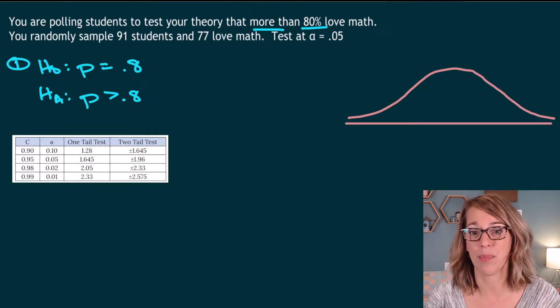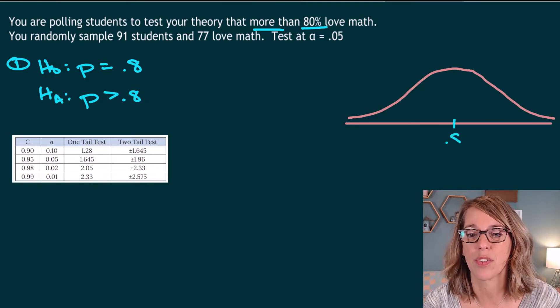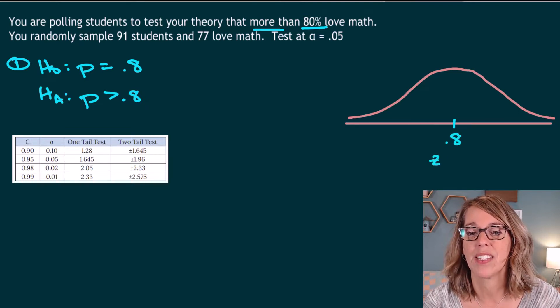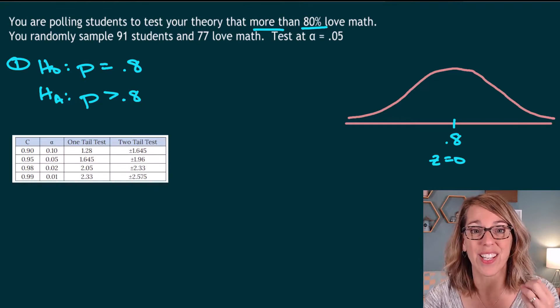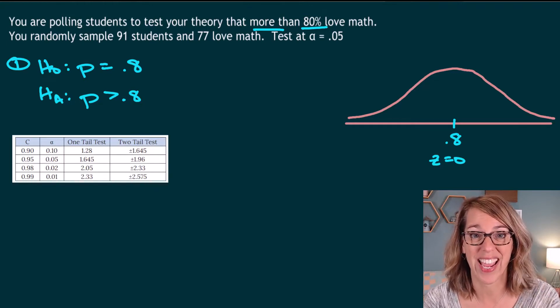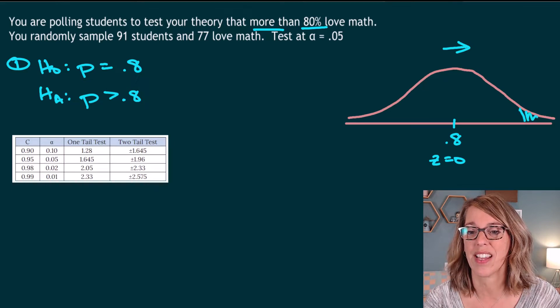Our hypothesized proportion is our expected value. So 0.8 goes right here in the middle at a Z score of zero. We are looking to see if we've got a significantly greater than 0.8 result. So significantly greater than points us to a tail on the right-hand side. And this gives me my rejection region.